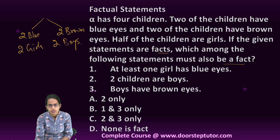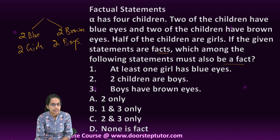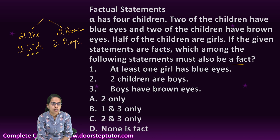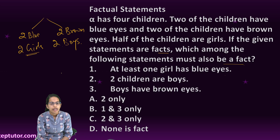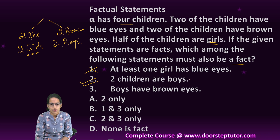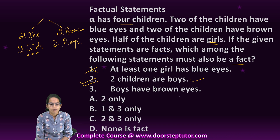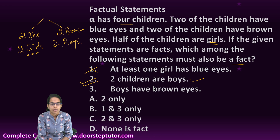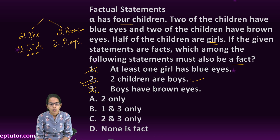Statement one: at least one girl has blue eyes — not required, because both girls could have brown eyes or both boys could have blue eyes. I cannot say that, so this statement is incorrect. Statement two: two children are boys — that is 100% sure, because half the children are girls and total four children, so definitely two children are boys. That is correct. Statement three: boys have brown eyes — again I cannot commit; boys could have blue or brown eyes, nowhere mentioned. So only statement two is correct.